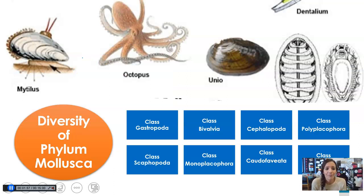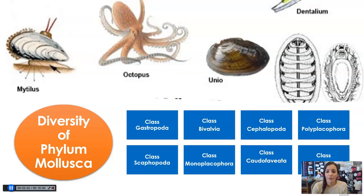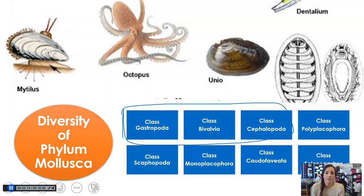So as promised, a little bit of the diversity of Phylum Mollusca. There are eight classes that we will talk about. Honestly, we're going to spend a majority of our time talking about these three here, because those are the largest classes and the most is known about them. We'll touch briefly on Polyplacophora, and then those bottom four we'll get to in just a moment as well.